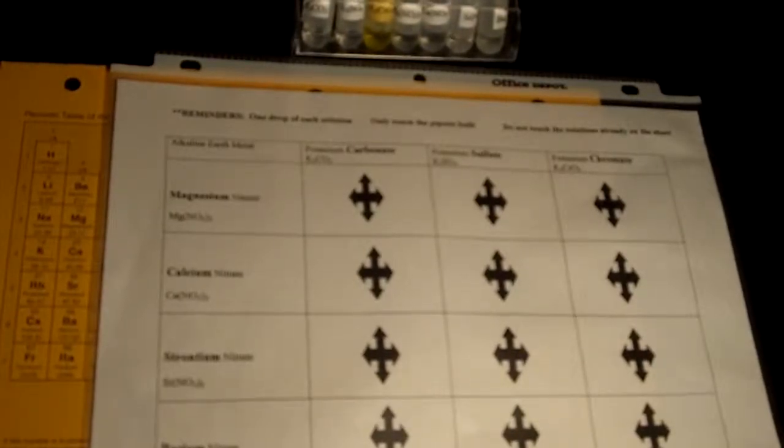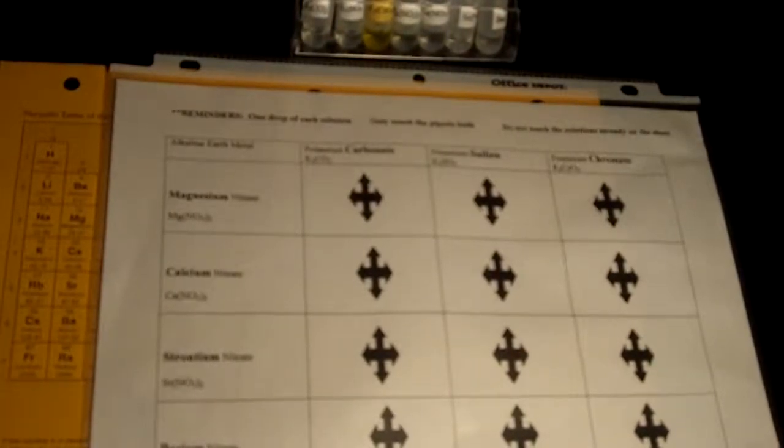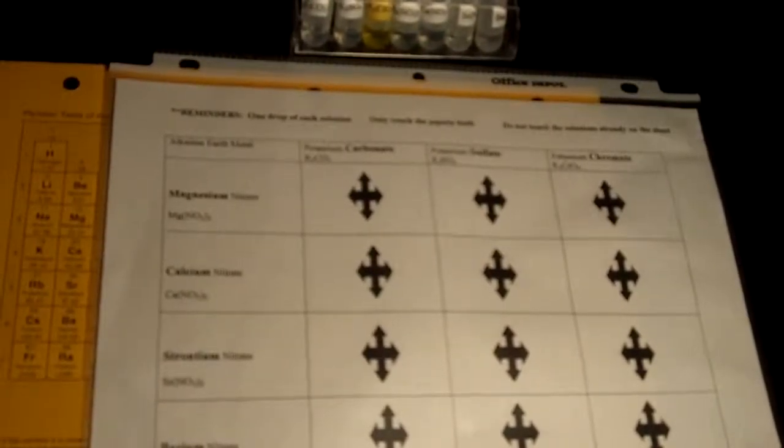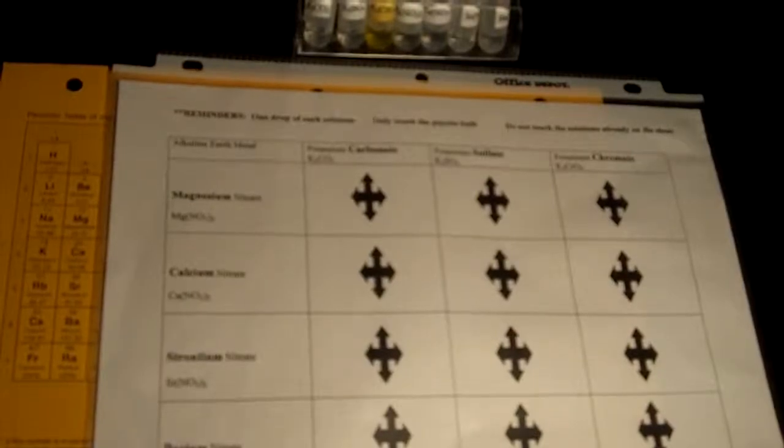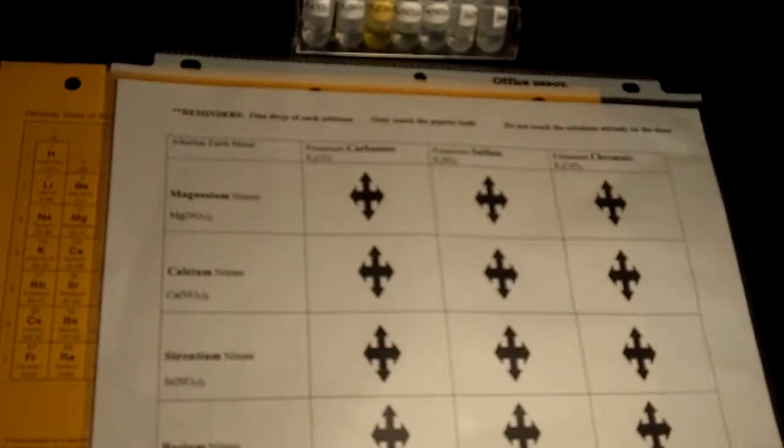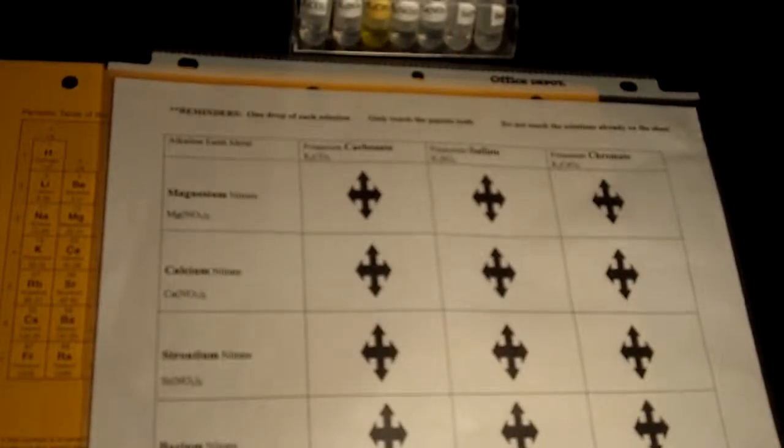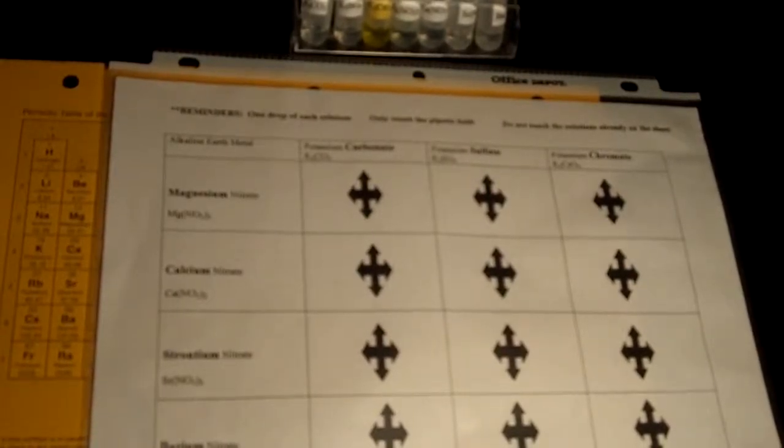One of these properties is the ability to form a precipitate, a solid substance, as a result of a chemical reaction. The precipitate cannot dissolve in water and eventually settles to the bottom of the container. In this laboratory activity, you will examine the reactive properties of the alkaline earth metals and make conclusions about the patterns you observe.